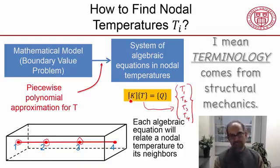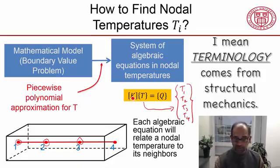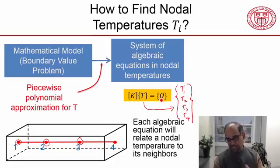K is called the stiffness matrix. It comes from structural mechanics, which we will see later. And that's the force vector. The boundary conditions will affect that. The heat generation term will affect that. Again, bad notation—that's not the heat generation term we saw earlier.